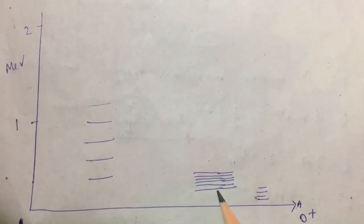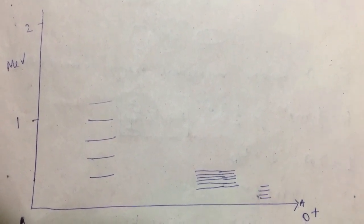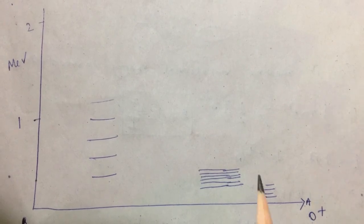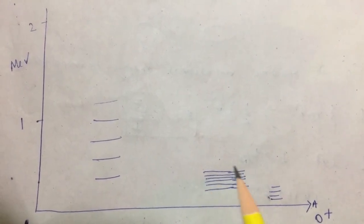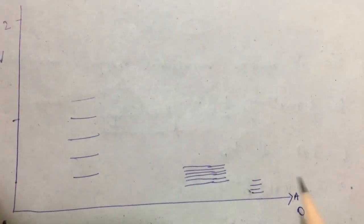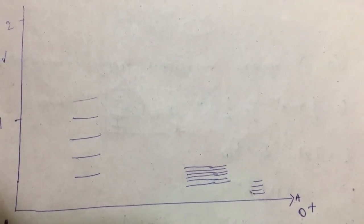But for a little bit higher A values, that is between around 150 to 190, we will get a vibrational spectra, and along with this, with slightly increasing A value, we are getting rotational spectra also.